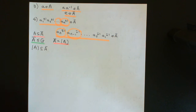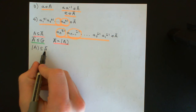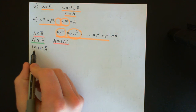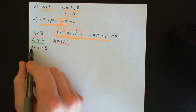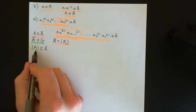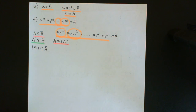So because A closure is a subgroup of G that completely contains the set A, it's one of the things that will have to be intersected together when we're constructing the subgroup of G generated by A. Therefore this subgroup of G generated by A is indeed going to be completely contained within A closure.